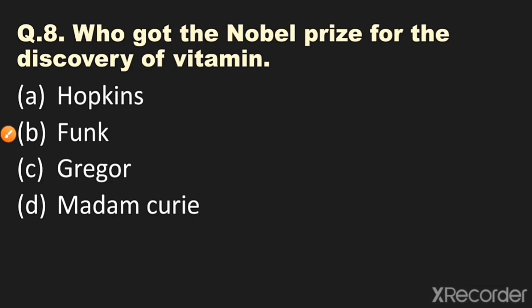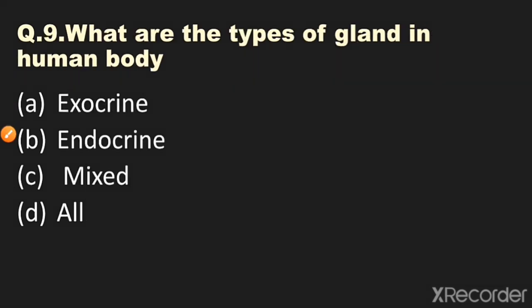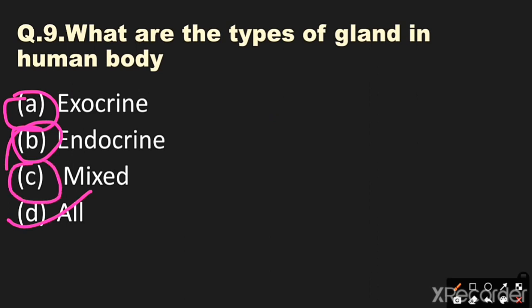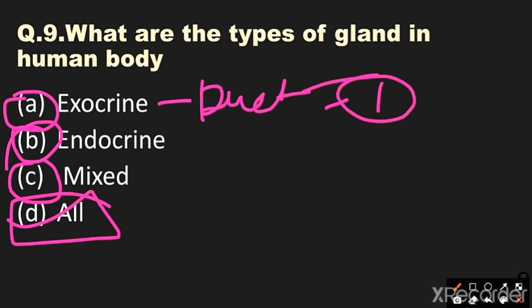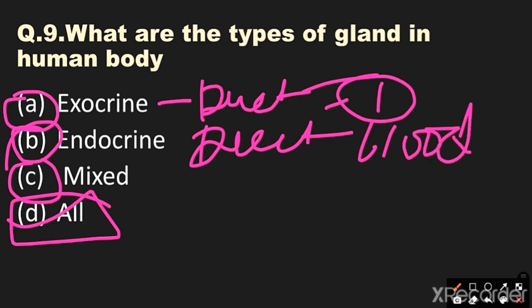Question number nine: What are the types of glands in the human body? Options: A) exocrine glands, B) endocrine glands, C) mixed glands, D) all. The answer is all. Exocrine glands have ducts and target a specific area. Endocrine glands are ductless and release hormones into the blood. Mixed glands have the characteristics of both exocrine and endocrine glands.